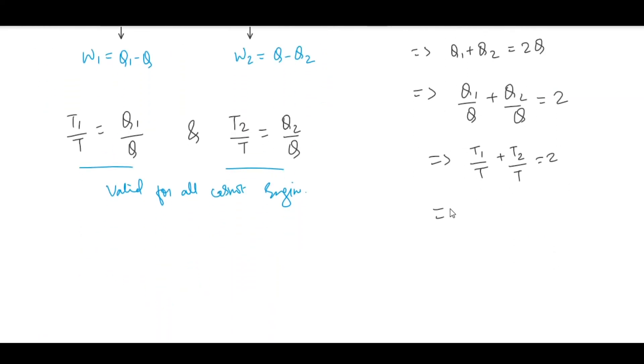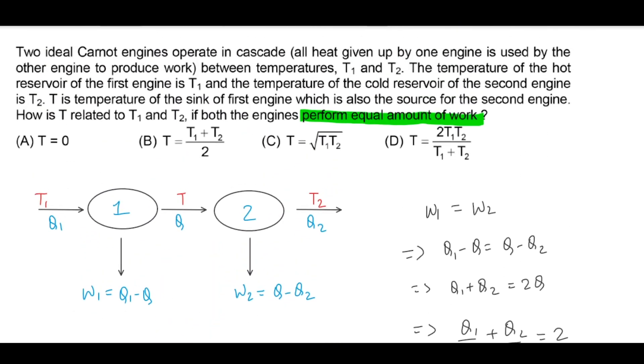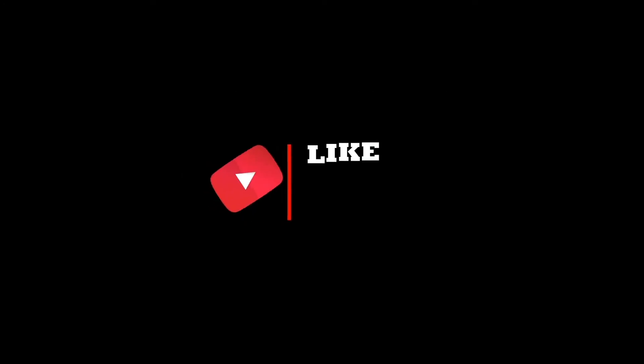Cross multiplying, we get T is equal to T1 plus T2 by 2. So it looks like B is the correct answer.